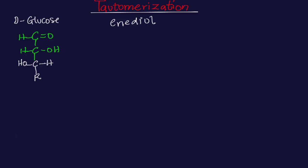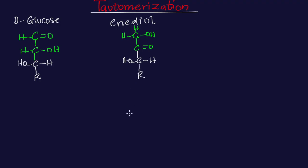Then let's do another structure, which is the case of fructose. In fructose, we are going to have hydrogen here, OH here, then hydrogen here, then there is a double bond. From there, I'll represent the rest as white. So here I'm going to have carbon, we are going to have hydrogen here, we are going to have OH here, and we are going to have our R group here as well. So this is the case of fructose.